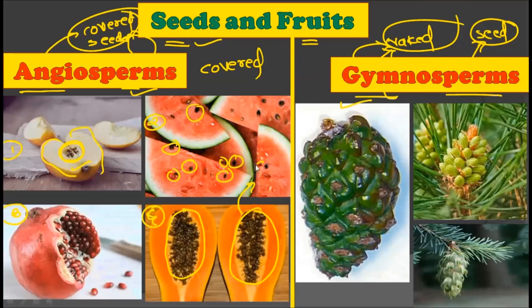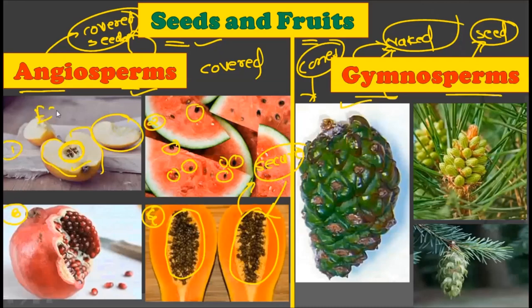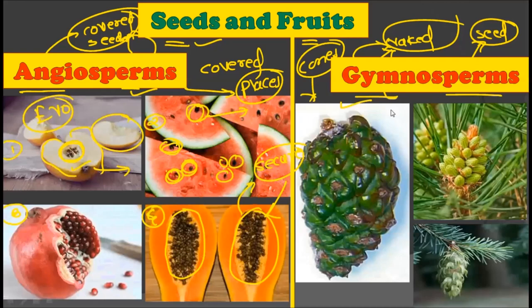Angiosperms tend to secure their seeds inside the fruit, while gymnosperms simply have cones that contain the naked seeds. This has an evolutionary advantage: fruits are eaten by many animals, and after eating the fruit, these animals disperse the seeds to different locations. This allows angiosperms to spread their seeds to varied places and grow everywhere on planet Earth, while gymnosperms, being unable to produce fruits, have limited seed dispersal and a very limited habitat.